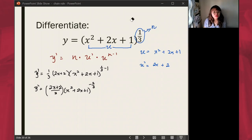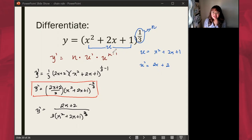Let's proceed to the simplification. This is one of the correct answers but could still be simplified further. You have a negative exponent here, thus you could put that in the denominator, which would be written as 2x plus 2 all over 3 times x squared plus 2x plus 1 raised to two-thirds.